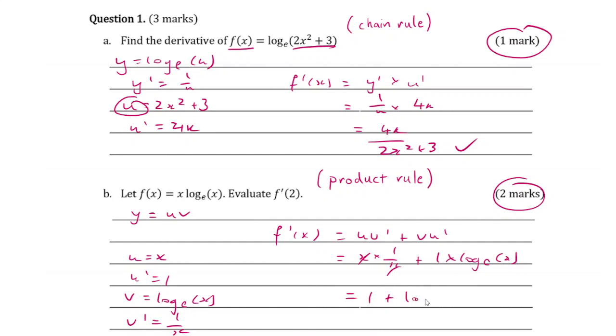Simplifying everything out, we get 1 plus log_e of x. Therefore, f dash of 2 is equal to 1 plus log_e of 2. Done.